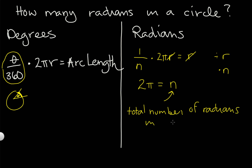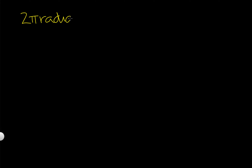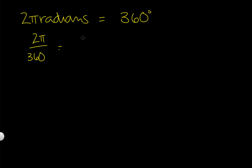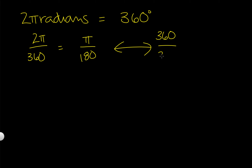Now what this gives us is a conversion factor. We know that 2π radians is going to be equal to 360 degrees. So we get 2π over 360, which we can simplify to π over 180. Or we can do it the other way around depending on what it is you're trying to convert — the conversion factor would be 360 over 2π, or 180 over π.